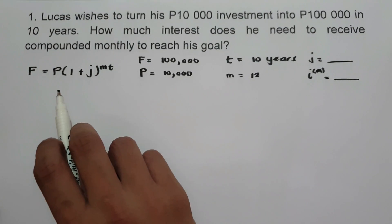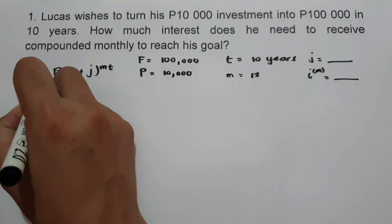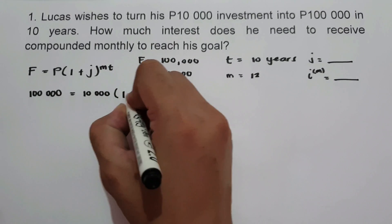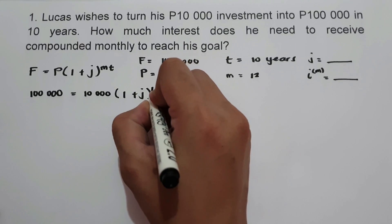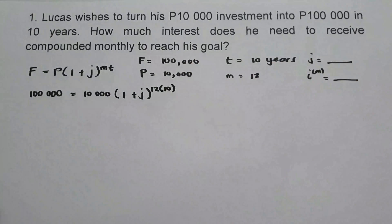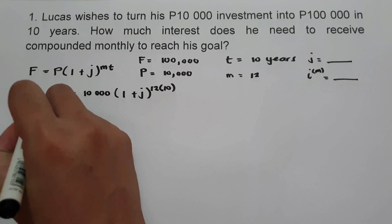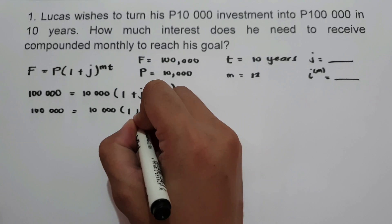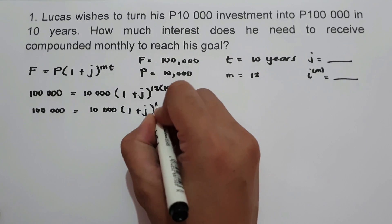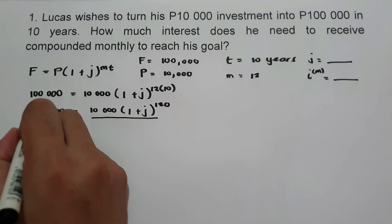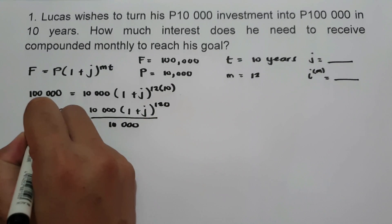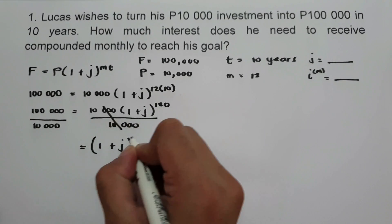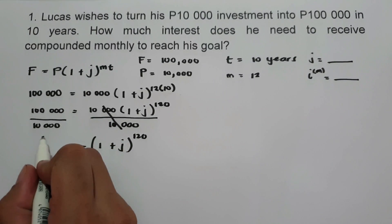Let us substitute the given values into the formula. Future value 100,000 equals principal 10,000 times the quantity of 1 plus J raised to M times T, that is 12 times 10. Simplifying, we have 100,000 equals 10,000 times the quantity of 1 plus J raised to 120. Then let us divide the whole equation by 10,000, giving us 1 plus J raised to 120 equals 100,000 divided by 10,000, that is 10.